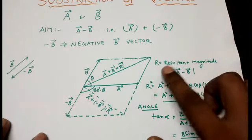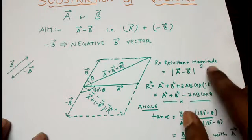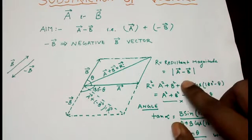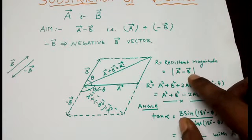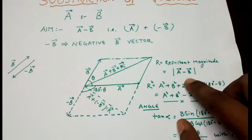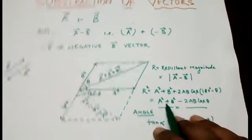Now this is resultant. R is the resultant magnitude. Now R is the modulus of A minus B. Modulus of A minus B.